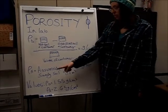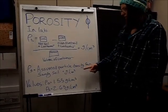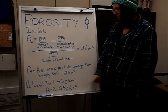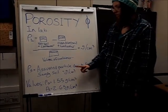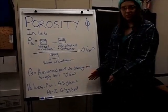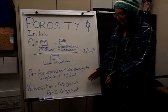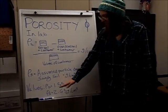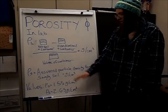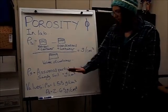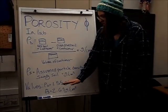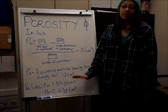For our particle density, we're using the assumed particle density for a sandy soil, and that is also in grams per centimeter cubed. So the values that we got from our lab, our bulk density was 1.55 grams over centimeters cubed, and our particle density is 2.65 grams over centimeters cubed.